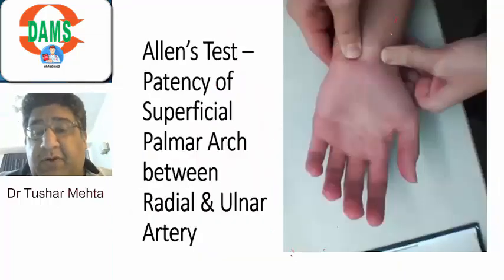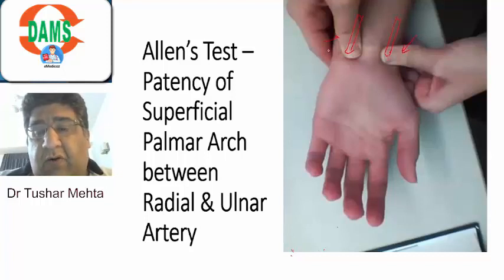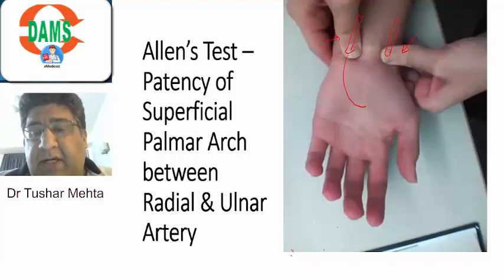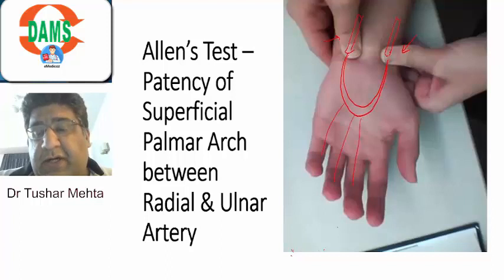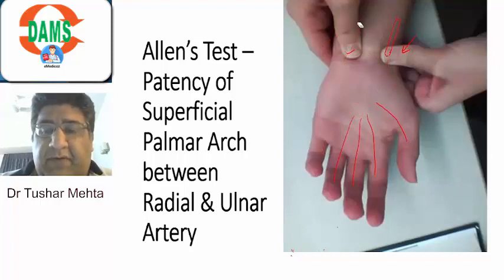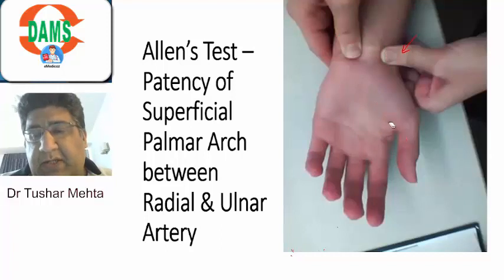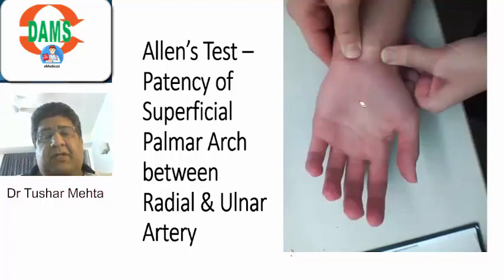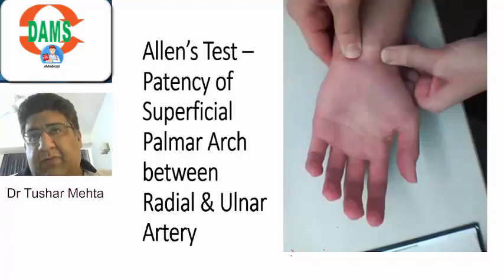Before I go further, you can see the position of the hand where one can imagine this can be the radial artery and this can be the ulnar artery. These two thumbs are of the examiner, which are occluding the radial and the ulnar artery. The radial and ulnar artery combine together in the palm to make what is called the superficial palmar arch, from where you get the individual digital arteries. This test is called Allen's test, which is done to detect the patency of the superficial palmar arch.